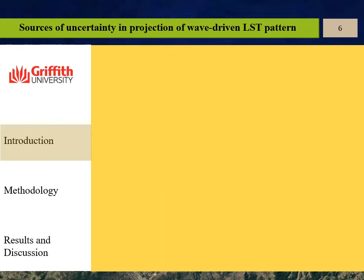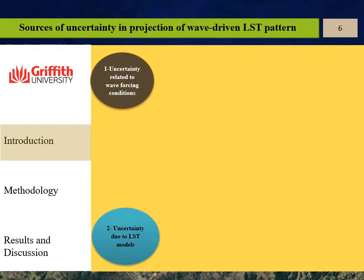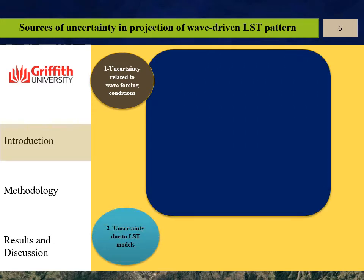The main sources of uncertainty in projection of wave-driven longshore sediment transport patterns are classified in two categories: uncertainty related to wave forcing conditions and sediment transport models. First, we do not know what will happen to future climates, so we define different emission scenarios such as different RCPs.